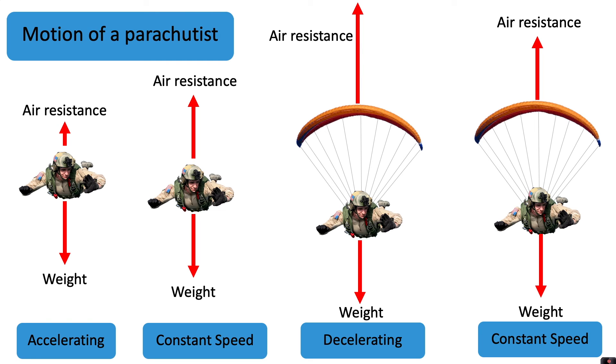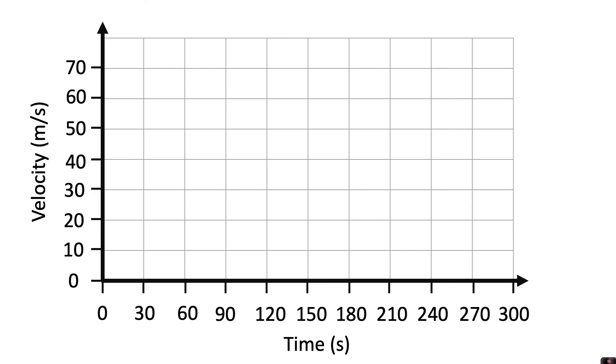We can put all this motion together on a motion graph called a velocity time graph. For Key Stage 3, you can think of velocity as speed. Although when you get to GCSE, you'll understand that it's a little bit different. So it has the same units.